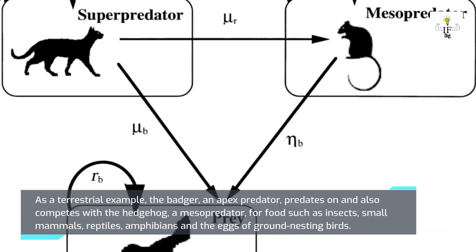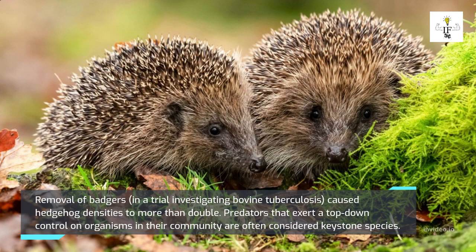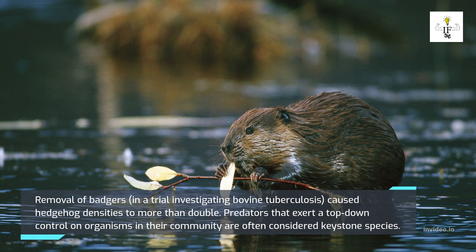As a terrestrial example, the badger, an apex predator, preys on and also competes with the hedgehog, a mesopredator, for food such as insects, small mammals, reptiles, amphibians, and the eggs of ground-nesting birds. Removal of badgers in a trial investigating bovine tuberculosis caused hedgehog densities to more than double. Predators that exert top-down control on their community are often considered keystone species.